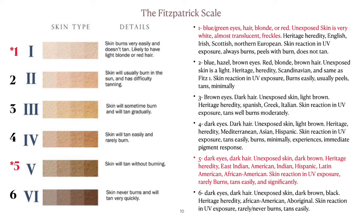Fitzpatrick Type 2: blue, hazel, or brown eyes; red, blonde, or brown hair; unexposed skin is light. Heritage includes Scandinavian and similar to Type 1. Skin reaction: burns easily, usually peels, tans minimally. Fitzpatrick Type 3: brown eyes, dark hair, unexposed skin is light brown. Heritage includes Spanish, Greek, and Italian. Skin reaction: tans well, burns moderately.